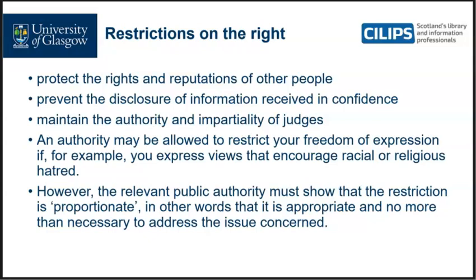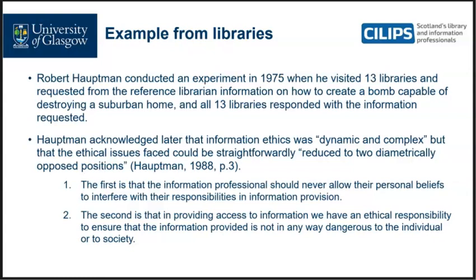Here is an example from the 1970s which had a great influence on information ethics. Robert Houtman conducted an experiment in 1975 when he visited 13 libraries and requested from the reference librarian information on how to create a bomb capable of destroying a suburban home. All 13 libraries responded with the information requested. Houtman became quite a mainstay of the field, writing several books on information ethics. It's a controversial case because ultimately the information the libraries provided was perfectly legal — it was from chemistry books — but equally, it was information that was potentially damaging to society.